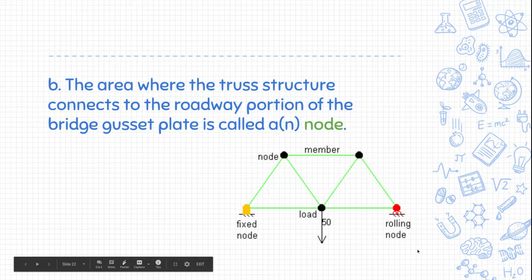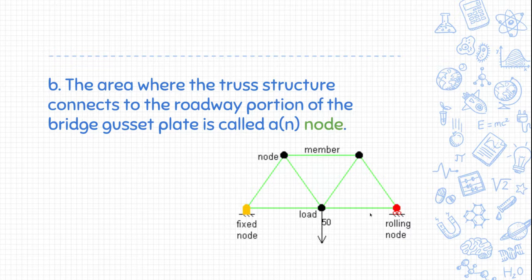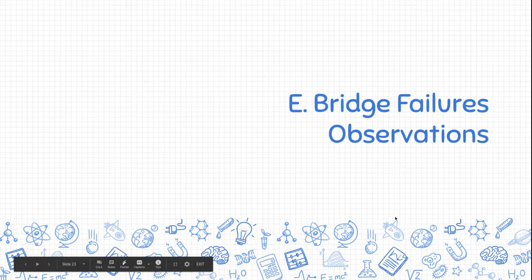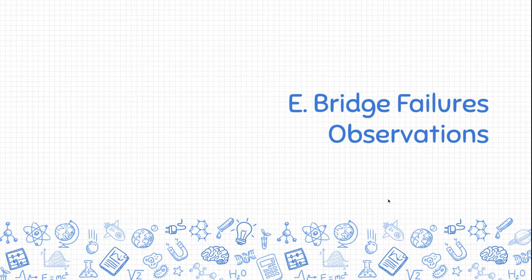The areas where the truss structures connect to the portion of the road are called nodes. Anywhere the triangle attaches to the ground at the end of one of those triangles is called a node. So — bridge failure. When they looked at the I-35 West Bridge and examined why the collapse occurred, they noticed a couple of things.